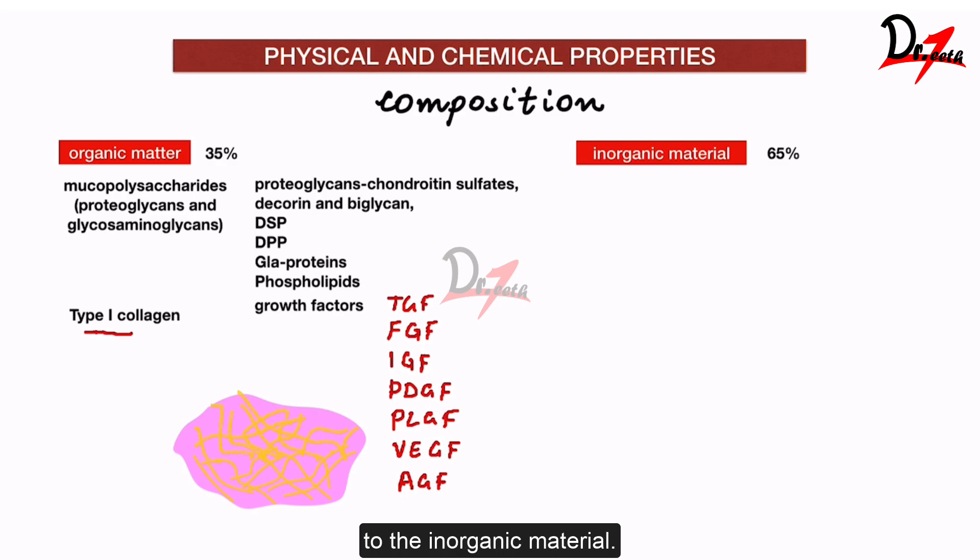Coming to the inorganic material. Inorganic material basically has hydroxyapatite which is similar to what is found in bone, enamel as well as cementum. Each hydroxyapatite crystal has several thousand unit cells and these unit cells have this formula which you have to remember. Also, remember that these unit cells are smaller than the hydroxyapatite crystals which were found in enamel.